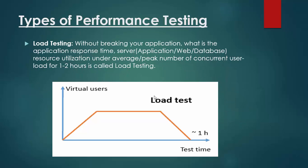Now, what are the different types of performance testing? 1. Load testing. What is load testing? Without breaking your application, you always first want to verify how many average or maximum number of users my application can support without facing any challenges. Challenges can be, for example, response time of every single critical transaction — transaction means any action performed by a user — or resource utilization of application and web and database server with respect to CPU, memory, thread, connection, session, etc. To measure the application performance under average and maximum number of users without facing any major challenge is called average and peak load testing.